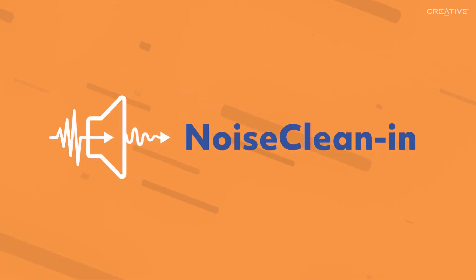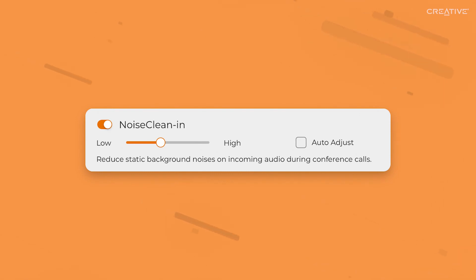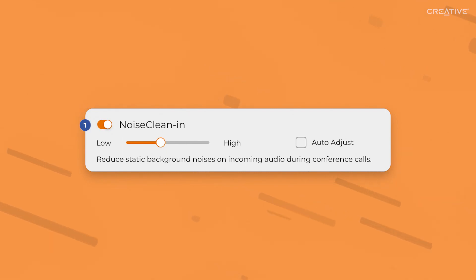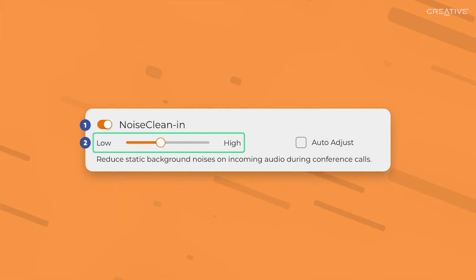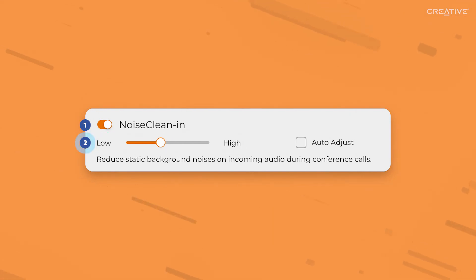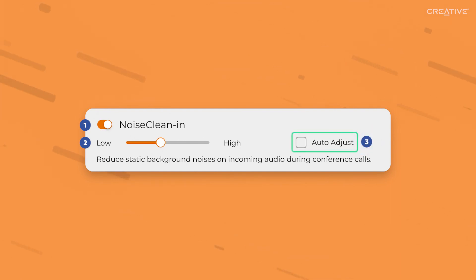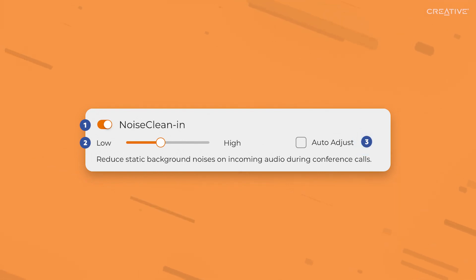Noise Clean In does the opposite of its counterpart, offering the ability to eliminate incoming background noise from the caller's end instead of yours. When activated, this feature helps to clean up the caller's voice by separating the voice's wavelengths from the background noise, then filtering it to only allow their voice to be heard by you. This setting lets you set the level of noise that you wish to eliminate from the caller's end. For example, if there are loud background noises coming from their end, we recommend setting this to High, and vice versa. Check the Auto Adjust box if the background noise coming from your caller's end is unpredictable and varies from time to time. The feature will then automatically adjust itself based on the incoming background noise levels throughout the call.